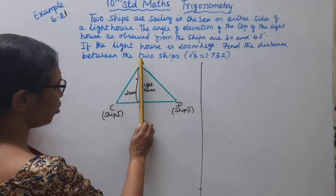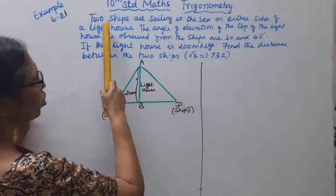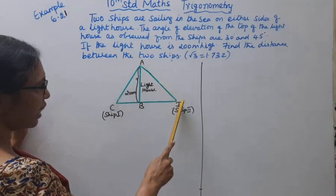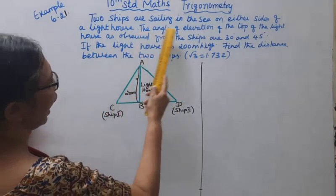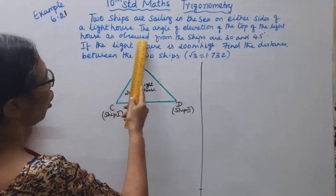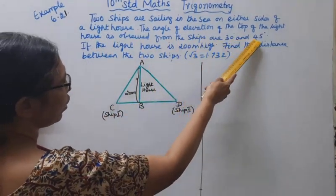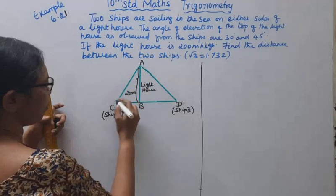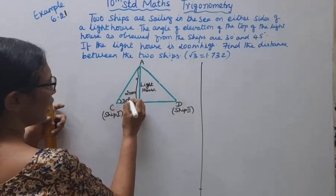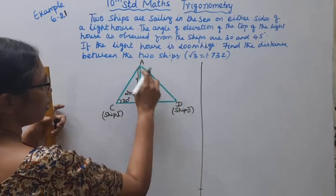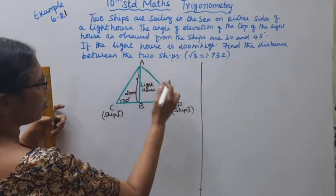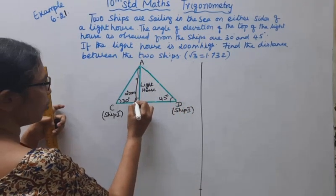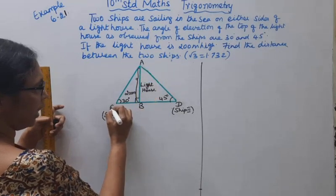On either side of the lighthouse, two ships are sailing in the sea. The angle of elevation of the top of the lighthouse observed from the ships are 30 degrees and 45 degrees.